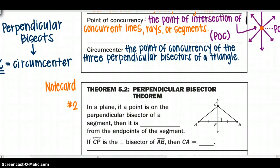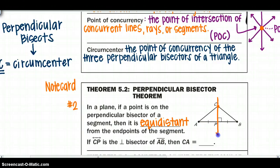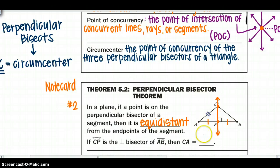Moving on to our theorems: note card number two is the perpendicular bisector theorem. In a plane, if a point is on the perpendicular bisector of a segment, then it is equidistant from the endpoints of the segment. Point C is on the perpendicular bisector CP because P is the midpoint and the line is 90 degrees, so CP is the perpendicular bisector of AB, meaning CA equals CB.